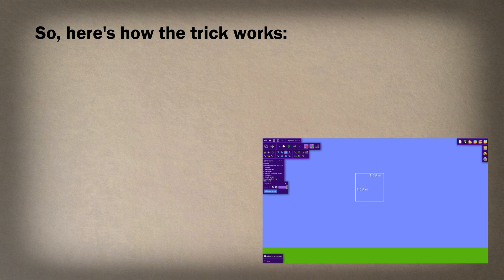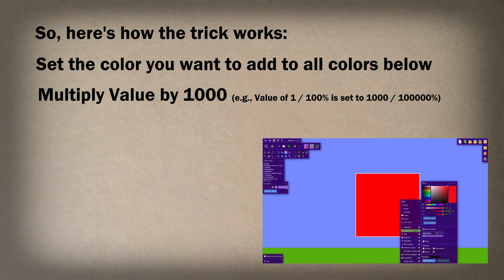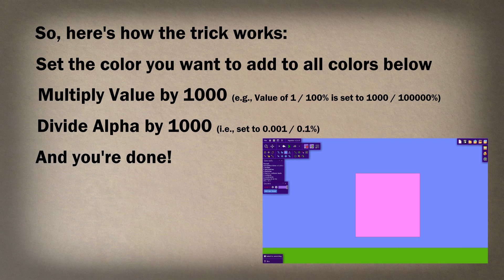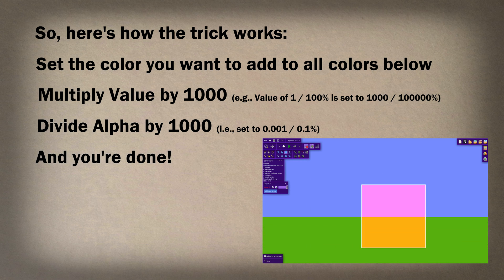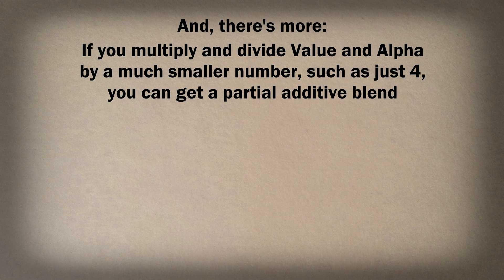Of course, we can't normally do this in Algodoo, so we have to exploit how regular transparency is handled by exceeding normal ranges. Here's how the trick works: first, you set the color you want to add to all colors below, multiply the value by 1000, and then divide alpha also by 1000. And then you're done — you've created additive color. If you multiply and divide value and alpha by a much smaller number, such as 4, you can get a partial additive blend.